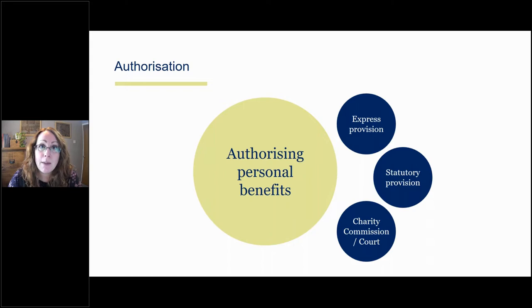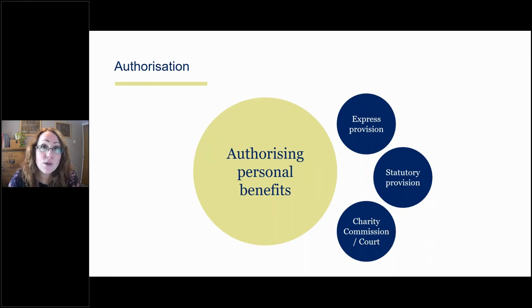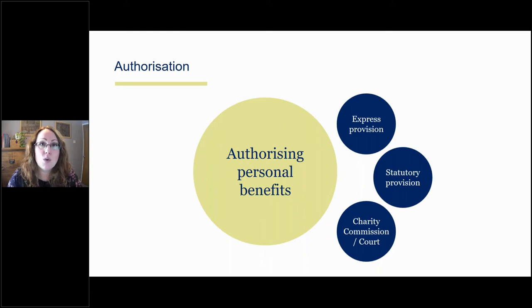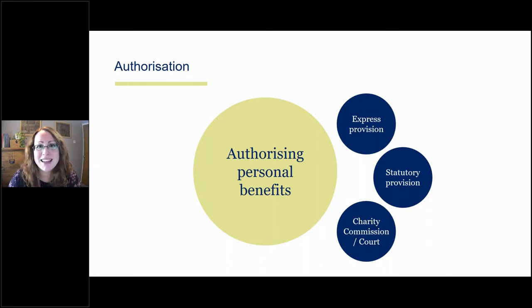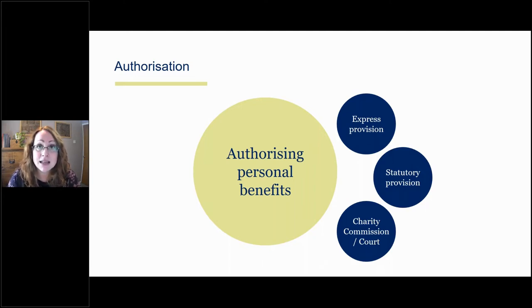Importantly, although it is possible to amend governing documents, there are restrictions — for many charities, charitable companies and CIOs in particular — around making amendments to provisions that allow trustees and connected persons to benefit. The provisions of your governing document on benefits must be consistent with the status of the organisation as a charity. You can't throw in lots of authorisations into your governing documents that go beyond what is merely incidental in carrying out exclusively charitable purposes. You can't use a charity as a vehicle just to obtain personal benefit. That is why the Charity Commission regulates what's called a regulated alteration for charitable companies and CIOs.